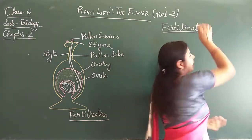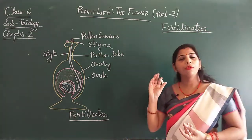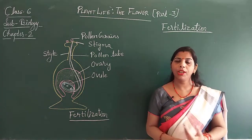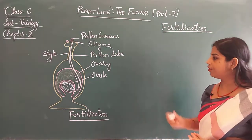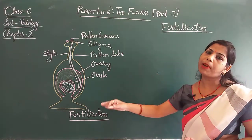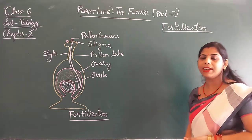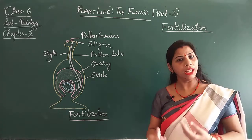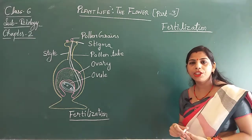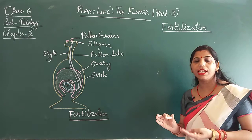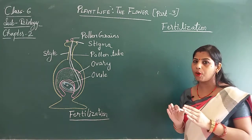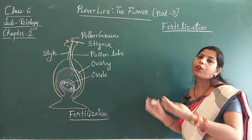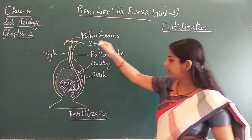So what is fertilization? It is the fusion of male gamete with the female gamete forming a zygote. This process is known as fertilization. In the previous video, the second part of this chapter, I told you about pollination. What is pollination? The transfer of pollen grain — pollen grain is the male gamete — from the anther to the stigma. This is the first step for fertilization.